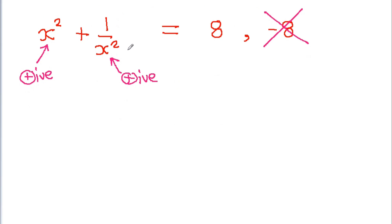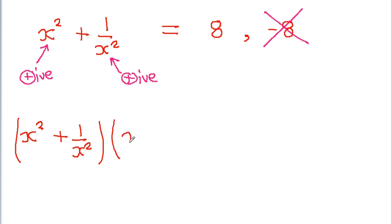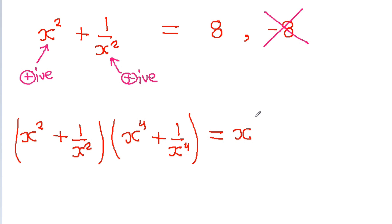Now we have to find the value of x to the power 6 plus 1 by x to the power 6. If we multiply (x² + 1/x²) with (x⁴ + 1/x⁴), then we get x² times x⁴ which is x to the power 6, and x² times 1 by x⁴ which is 1 by x².